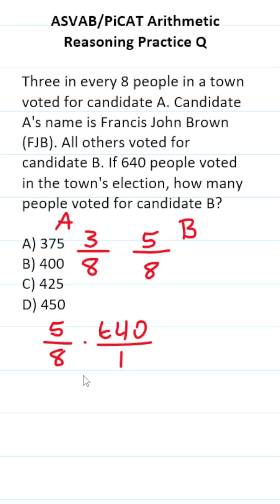Write 640 as a fraction by placing it over one. Cross-reduce. Eight goes into eight one time. Eight goes into 64 eight times. Tack on that zero.